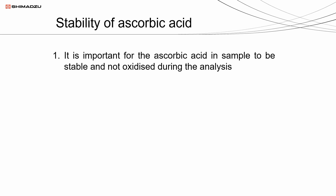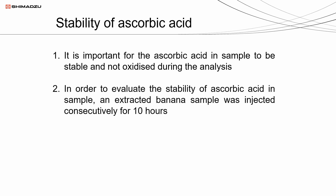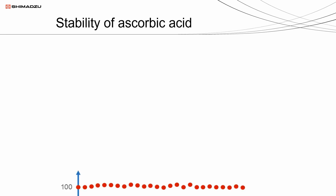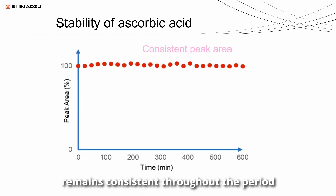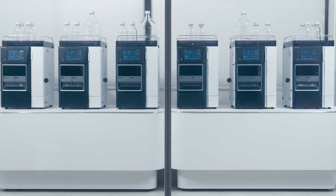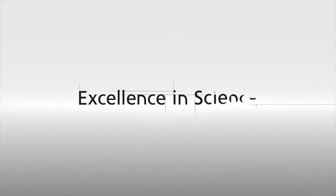It is important for the ascorbic acid in the sample to be stable and not oxidized during the analysis. In order to evaluate the stability of ascorbic acid in the sample, an extracted banana sample was injected consecutively for 10 hours. The peak areas of the injections were then compared. The peak area of ascorbic acid remains consistent throughout the period, showing that it is stable in the sample.